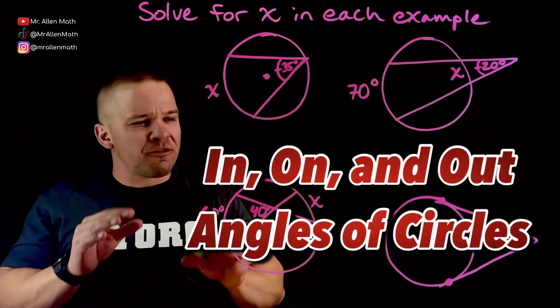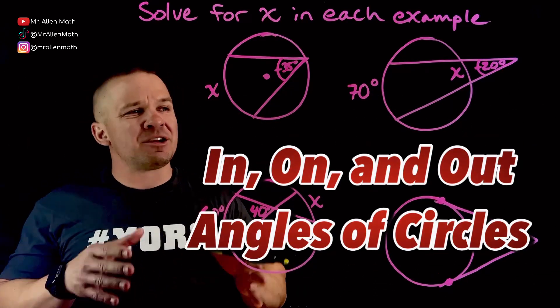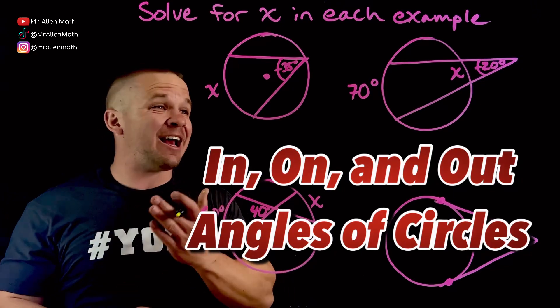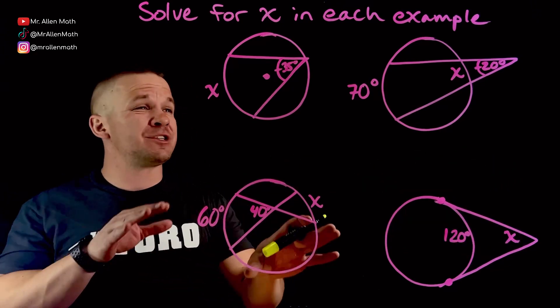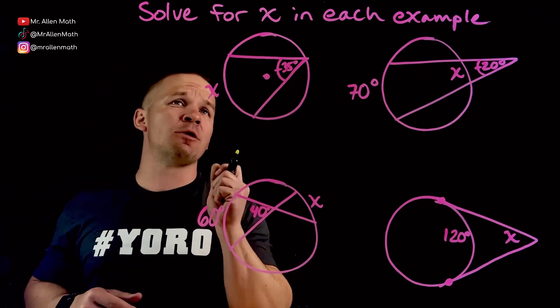What's poppin' dogs? Mr. Allen here with four dope examples about circles and our in, out, and on angles. Man, circles have a ton of stuff going on here. We're just getting the tip of the iceberg with these in, out, and on angles, and it is awesome.